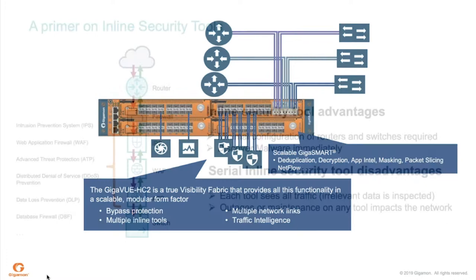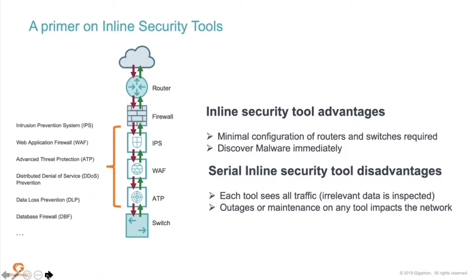Let's go back in time to look at the old inline security tool model. In the 90s and early 2000s, a typical network had a router, firewall, and then all tools were bump-in-the-wire, added serially. That was easy to insert — just cabling — and your IPS or web application firewall could discover malware immediately. But the problem was every tool in this serial chain sees all traffic, so irrelevant data is inspected. The email security server inspects everything when it only needs to see emails, creating a bottleneck as all traffic traverses each tool in sequence.